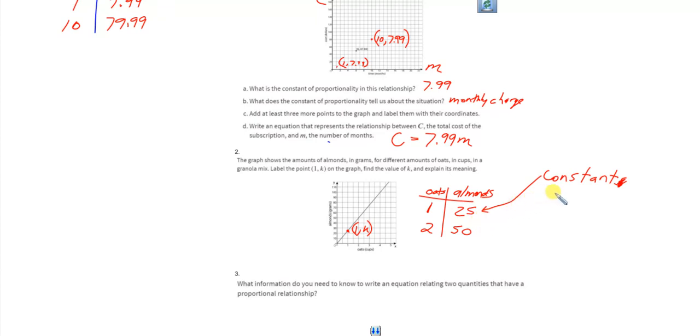So, explain its meaning, you could say that for every 25 grams of almonds, the mix requires a cup of oats. That's what it means. It's the constant of proportionality.